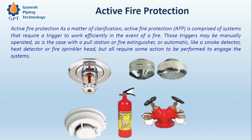There are also certain active fire protection systems that do not require direct involvement of personnel — they are automatic. Those triggers may be manually operated, as in the case of a pull station or fire extinguisher, or automatic, meaning no person needs to be physically present. Automatic systems are event-driven — triggered by a rise in temperature, smoke, or flame — such as a smoke detector, heat detector, or fire sprinkler head.